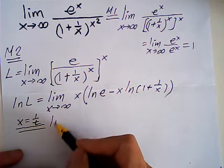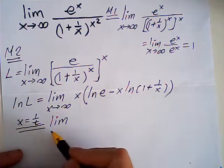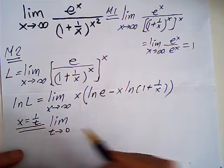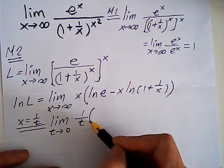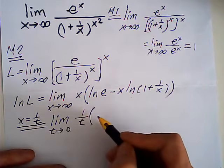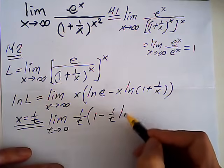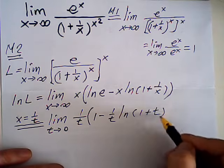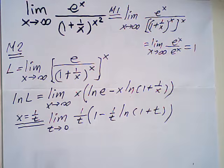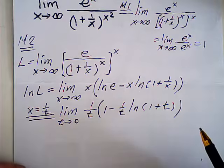So this would be the limit. When x approaches infinity, t approaches 0. So this becomes (1/t) times [1 minus (1/t) times log(1 + t)]. For this, I'm using the Maclaurin series expansion.